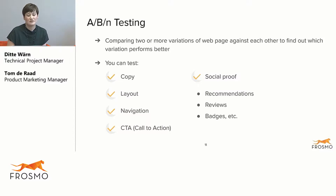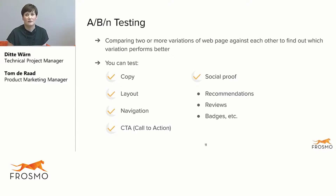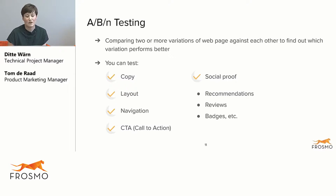With this type of testing you can test quite a lot of things. Here are a few examples — probably the most common ones. So copy: it can be different versions of a text, or text on a button or something like that, or even the style — how the text is presented on the website.